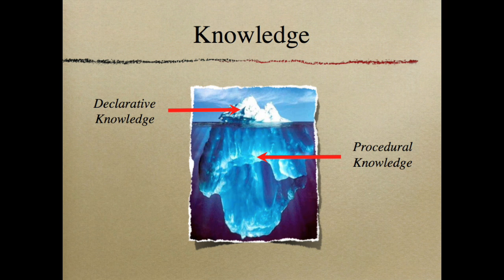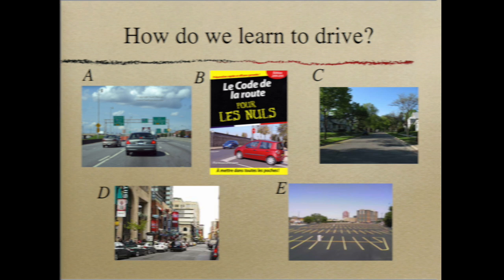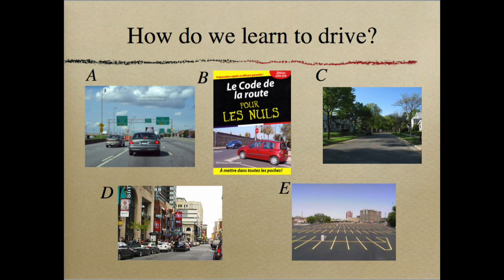If we look at the iceberg analogy, procedural knowledge is the major part of the learning, and declarative knowledge takes less time. Going back to learning to drive, we've got the driver's manual — which is the declarative knowledge — and then the parking lot, suburban street, downtown, and highway are all automatization processes that develop procedural knowledge.